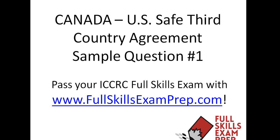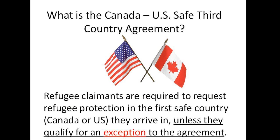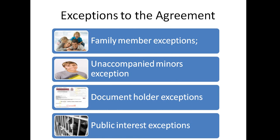This is a continuation from the previous video on the Canada-US Safe Third Country Agreement. This is your sample question and we'll go over the analysis as always. Refugee claimants are required to go to the first country they set foot in — that is Canada or the US — unless they qualify for an exception. The exceptions, just like we saw yesterday: family member exceptions, unaccompanied minors, document holders, and public interest.